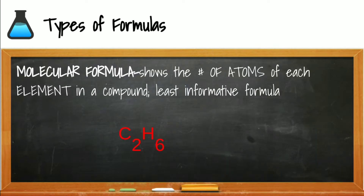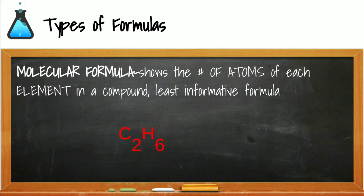There are three types of formulas we will look at when describing organic compounds. The first is the molecular formula — for a hydrocarbon we usually write the carbon and then the hydrogen, and it just shows the number of each element in the compound. For example, this formula has two carbons and six hydrogens.